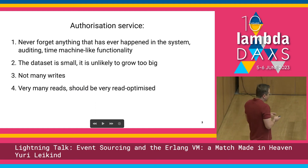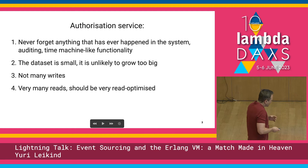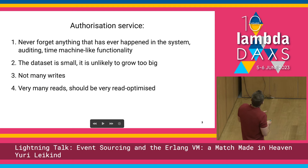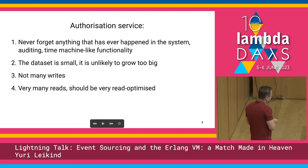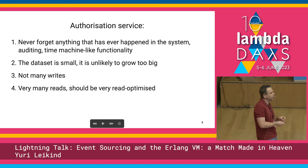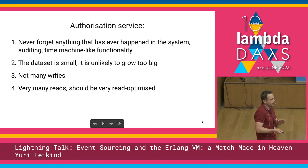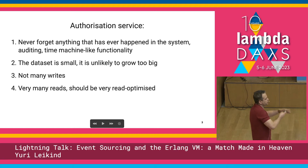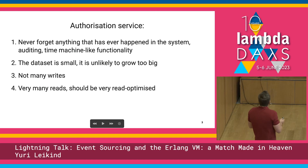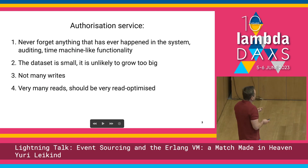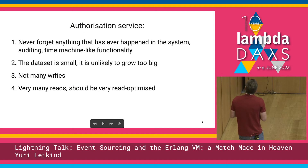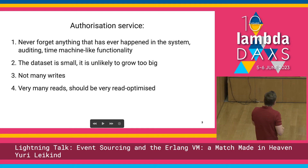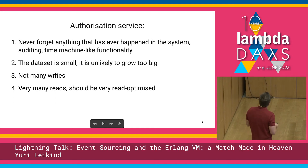First of all, the data set that this service is responsible for is very sensitive and we should never forget anything that has ever happened in the system. We should be able to implement something which I call a time machine functionality — being able to go back in time and analyze the state of the application, say three months ago on a Friday at 5 a.m. The data set is small, unlikely to grow too big, will never have many writes, and it's an internal component — not for the general public — but it will have very many reads, so it should be very read-optimized.